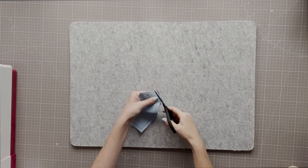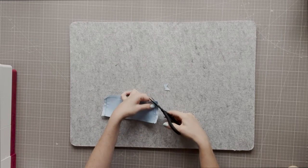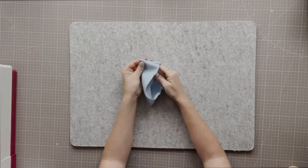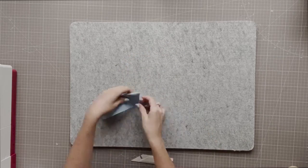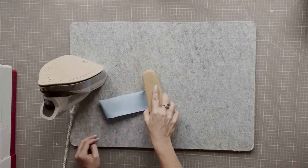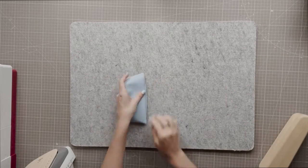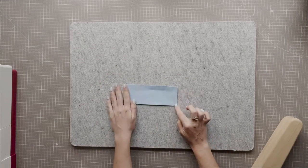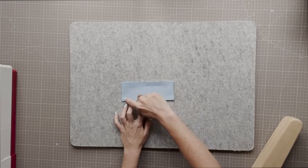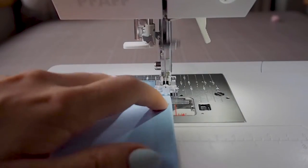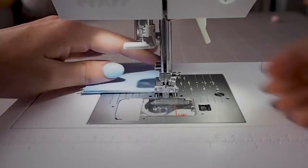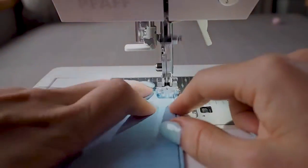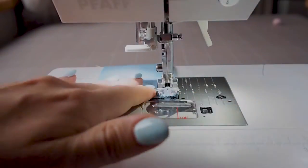Clip the corners and turn the flap the right way round. Push the corners out to sharp points and press. Top stitch around the three edges.